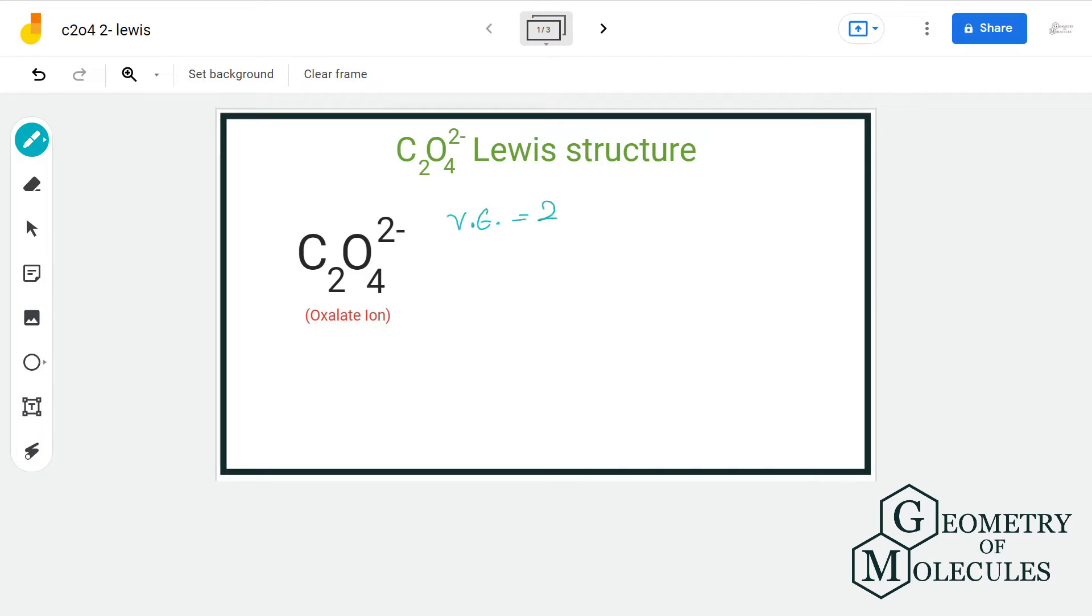We have two carbon atoms having four valence electrons, two oxygen atoms having six valence electrons, and this negative charge here represents gain of additional two electrons. Now that gives us a total of 34.